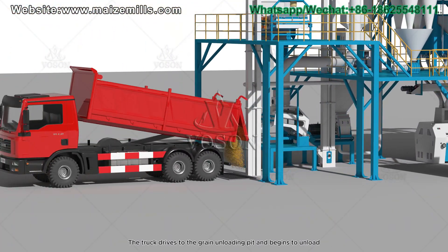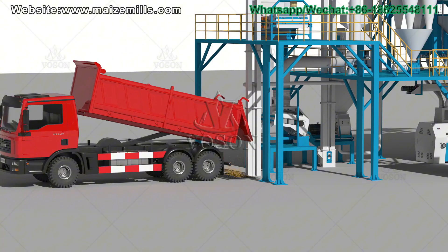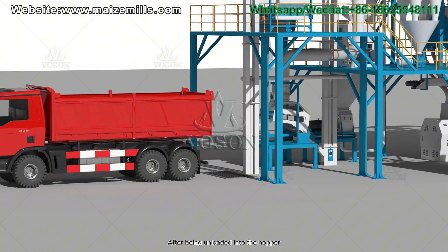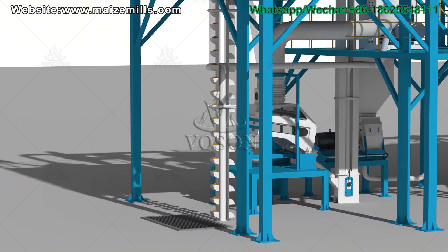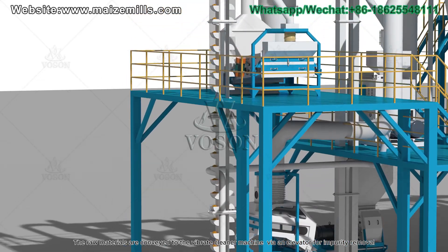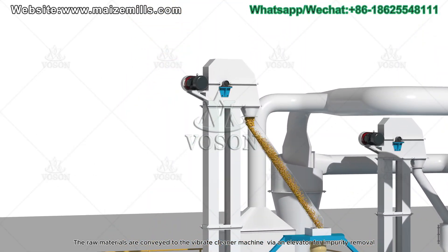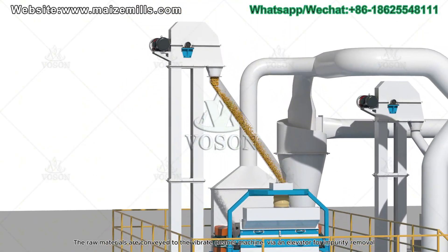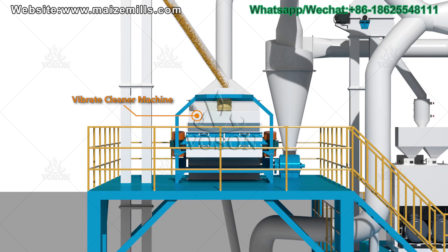The truck drives to the grain unloading pit and begins to unload. After being unloaded into the hopper, the raw materials are conveyed to the vibrate cleaner machine by an elevator for impurity removal.